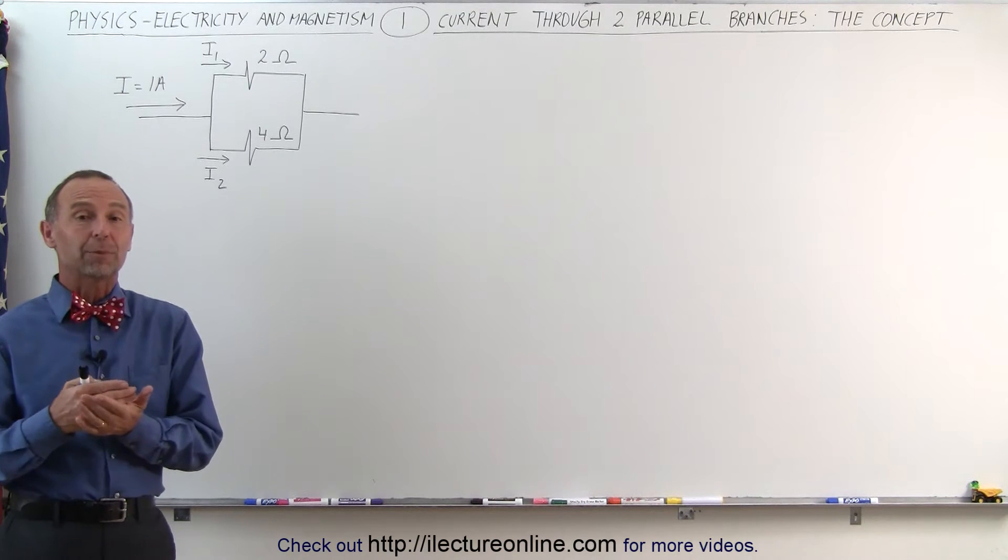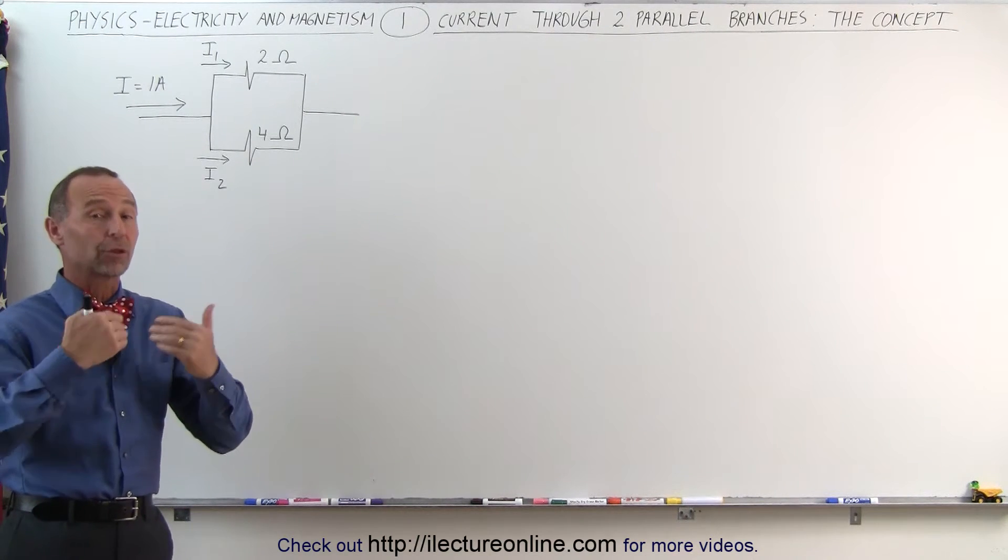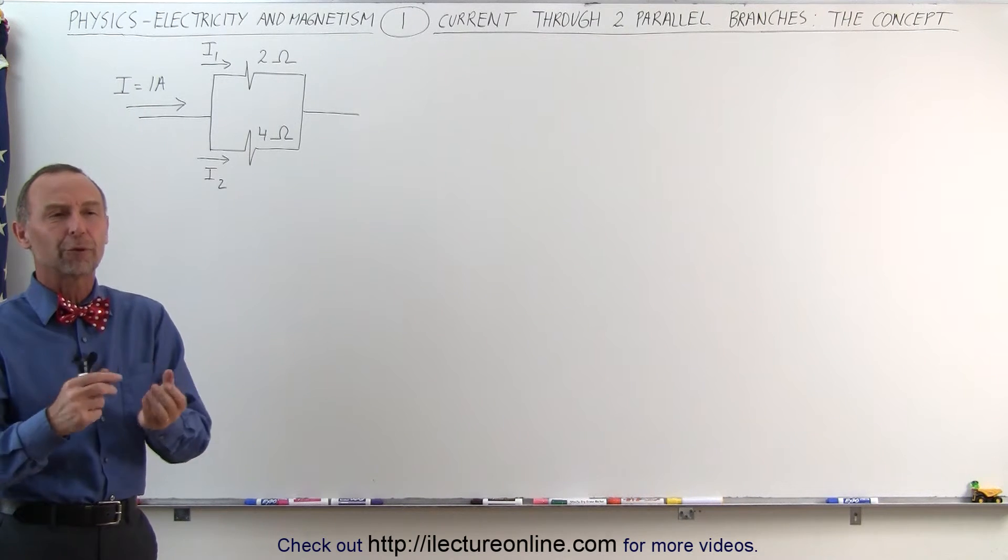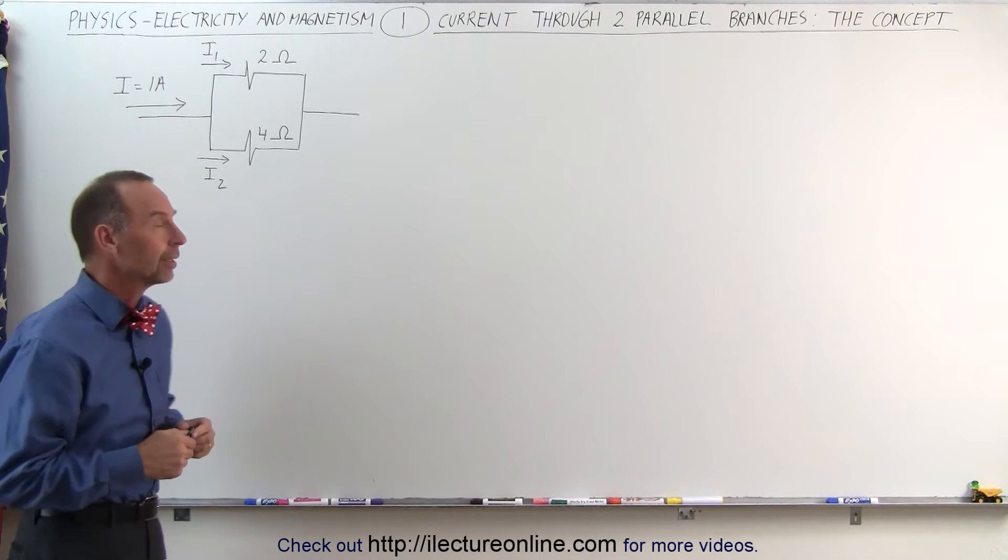And starting out, let's first do an example with just two branches, get the concept, see some examples, and then work our way up to three branches and four branches and so forth to understand how we can calculate the current through multiple branches when they're in parallel.